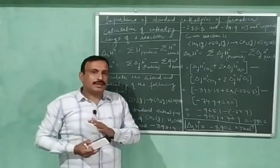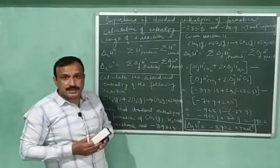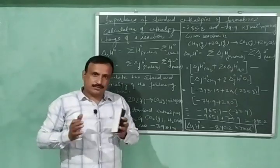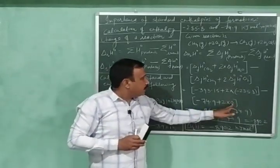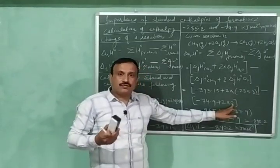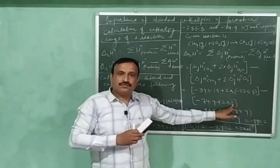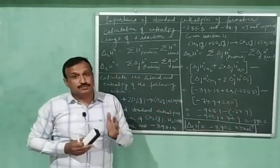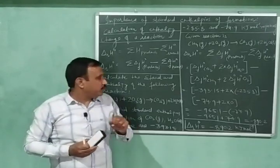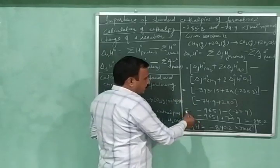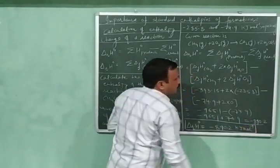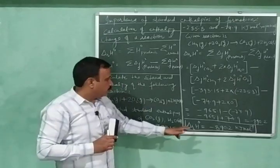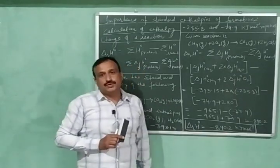Substituting the values of standard enthalpies of formation of all reactants and products, the standard enthalpy of formation of oxygen is taken as 0, following the convention that the standard enthalpy of formation of every element in its most stable state is zero. After solving, the final value is -890.2 kJ/mol.